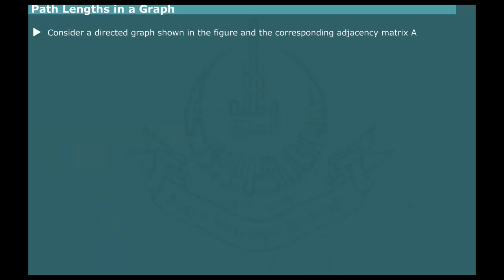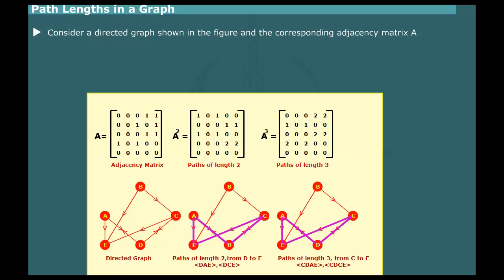Consider, for example, the directed graph shown in figure, and the associated adjacency matrix A. Next figure shows the square of A. From the matrix A square shown in the figure, we can conclude that there is one path of length 2 between A and C.